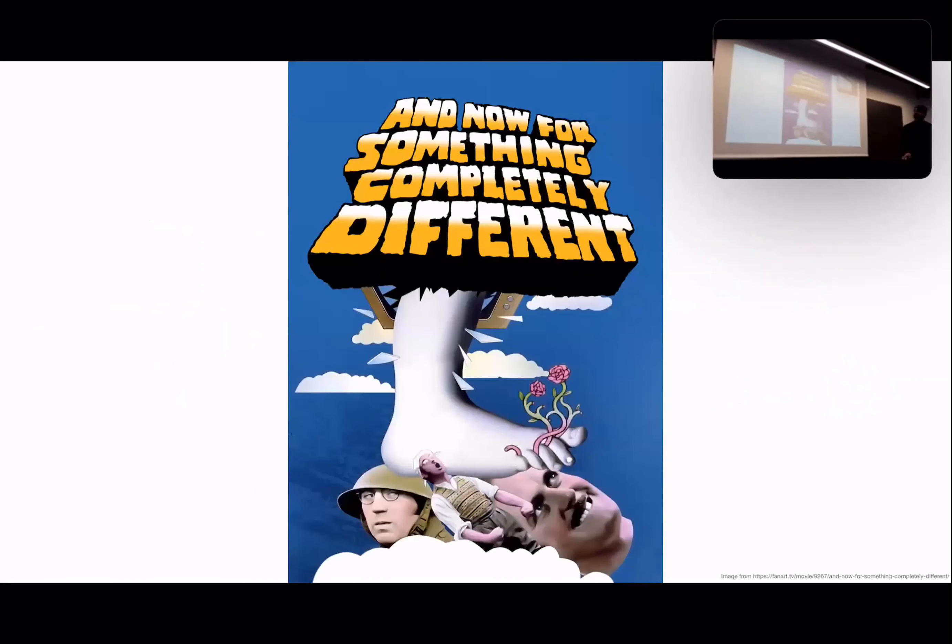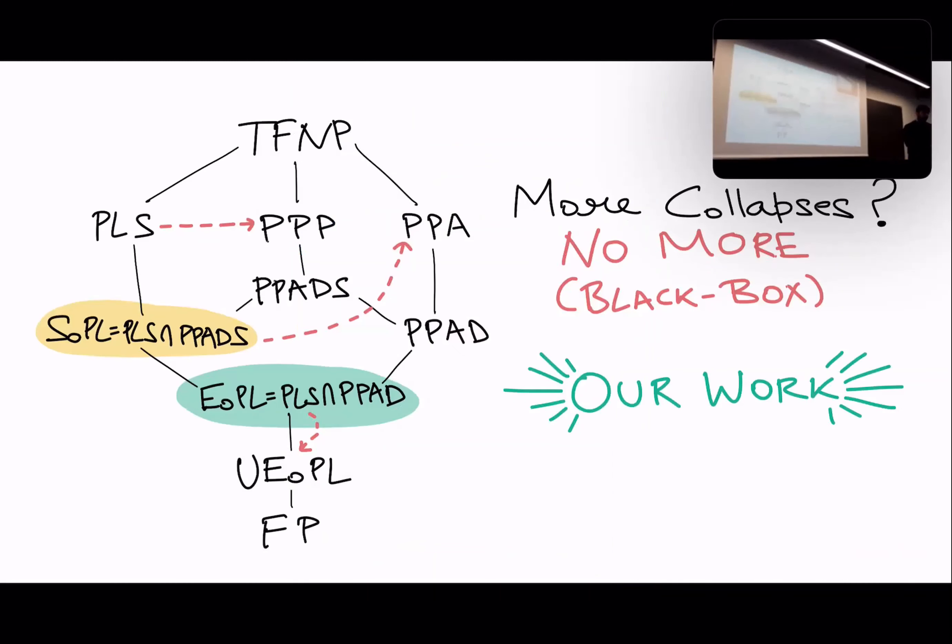But some questions were left open, in particular, I think the most famous one is whether PLS was not in PPP with respect to an oracle. So that's what we mean. In this hierarchy, there are no more black box collapses. All right. So this is a summary of our results in TFNP. Now let me completely change tracks.